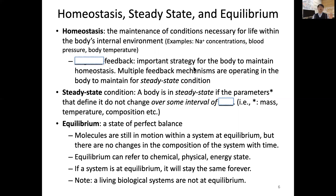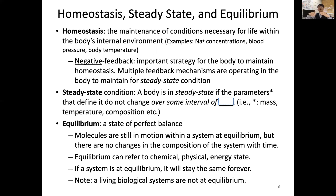An important strategy for our body to maintain homeostasis is a feedback system, especially so-called negative feedback. This means when these parameters get higher, we have a system to put them down; when they become lower, we put them higher. So in the negative direction, feedback allows us to keep our homeostasis.